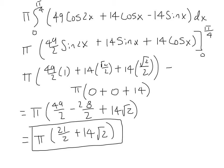When we integrate, we apply the chain rule to 49 cosine 2x, winding up with 49 sine 2x over 2. The integral of cosine x is sine x, and the integral of sine x is minus cosine x, but with the minus sign out front it becomes plus cosine x. Evaluating from 0 to π/4: at x = π/4, we have 2 times π/4 = π/2, sine of π/2 is 1, and sine of π/4 and cosine of π/4 are both √2/2.